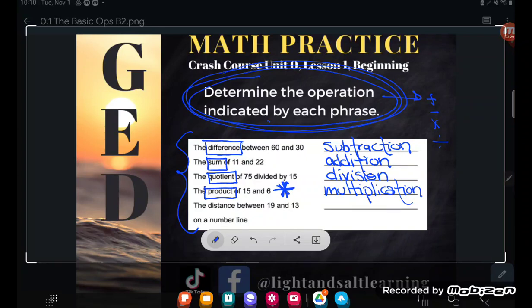And then finally, there were only four operations in four words: sum, difference, product, quotient. So how come Kate has a fifth one? Well, one of these has a synonym. It has a word that means the same thing. The distance between 19 and 13 on a number line. You're trying to find the space between them. The difference between them. Distance is a synonym with difference. They mean the exact same thing.